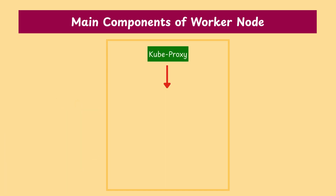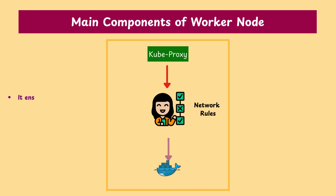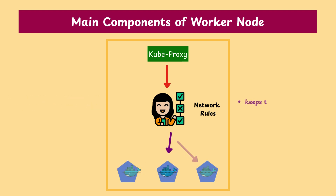Kube-proxy manages network rules. It ensures that requests can flow properly to your containers and keeps traffic balanced across pods.